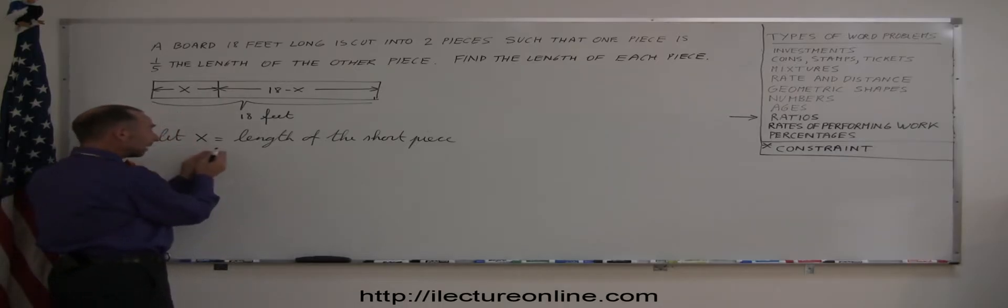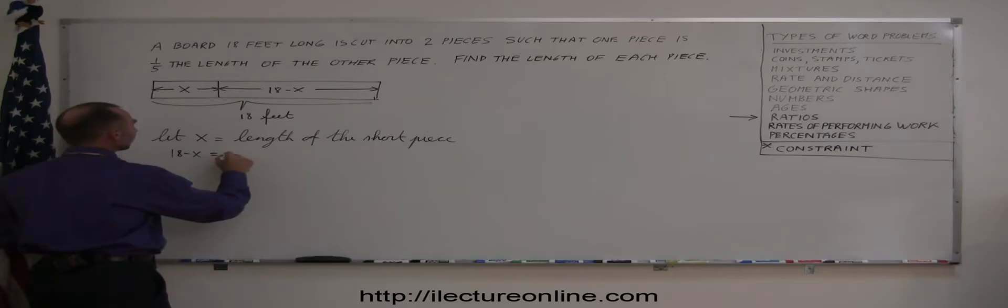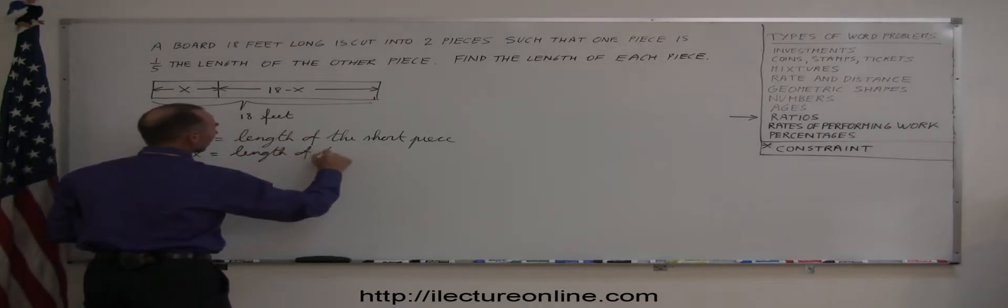So x is the length of the short piece. So that's a good definition and then 18 minus x is equal to the length of the long piece.